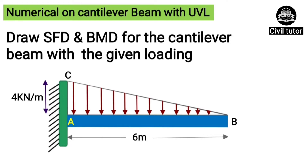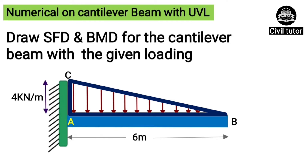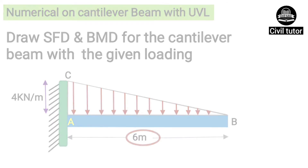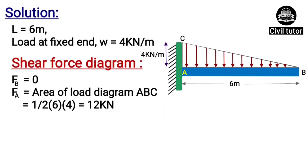We have a cantilever beam carrying a uniformly varying load from 0 at point B to 4 kilonewton per meter at point C, and the span of the beam is 6 meters. For drawing the SFD, we need to calculate the values of shear force at points B and A.